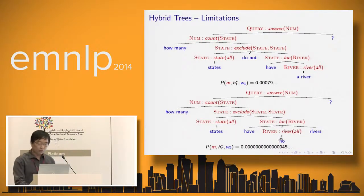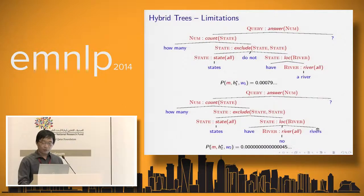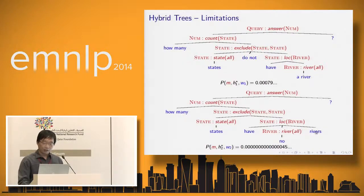To solve the first problem, we need to introduce some long-distance dependencies. To solve the second problem — since 'river' is correctly aligned to its semantic unit — if we can introduce features at the word level, we can potentially establish the correct dependencies between the semantic unit and the word. So to solve the second problem, we need to introduce features.